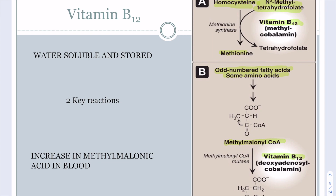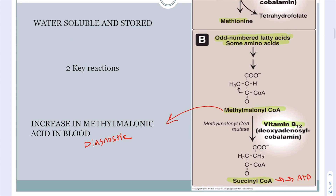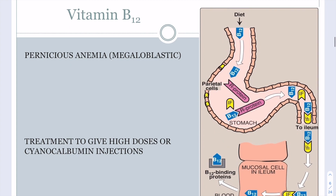One signal of vitamin B12 deficiency is accumulation of methylmalonyl-CoA, which leads to increased methylmalonic acid in the blood — this is diagnostic for vitamin B12 deficiency. Vitamin B12 deficiency is mostly characterized by malabsorption. Although B12 is water-soluble, it is stored, and it has months to years of storage, so it can take a long time to develop a deficiency.